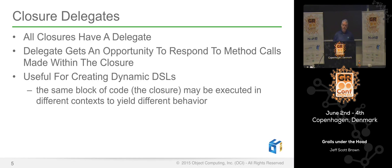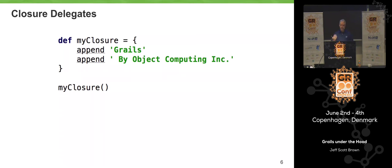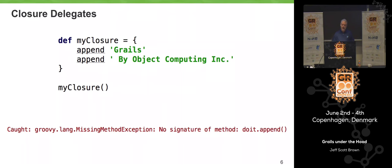Here's some code that creates a closure where we're invoking a method called 'append' and passing the string 'Grails' as an argument, then calling append again passing 'by Object Computing Inc'. If you were to execute that closure, you'd get a MissingMethodException — 'append' is not a keyword, it's nothing magic in Groovy, there's just no such method. So you'd get a Groovy runtime MissingMethodException like 'No signature of method Script.append is applicable.'